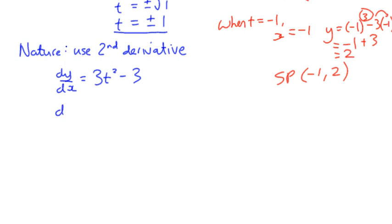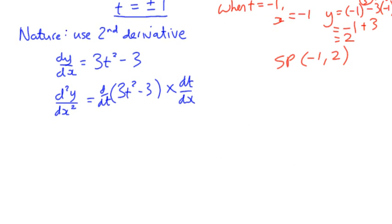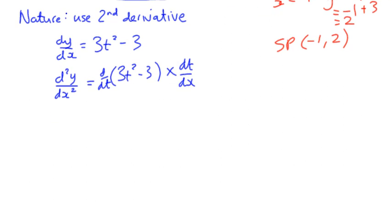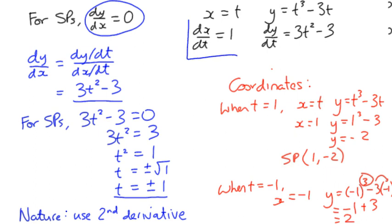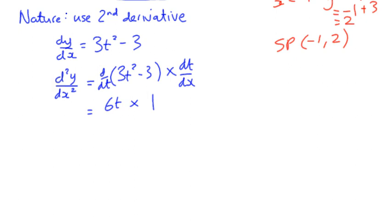So the second derivative, d²y/dx², is the derivative of 3t² - 3 with respect to t. So we're going to differentiate that as we normally do, as long as we multiply by dt/dx, because we're not really differentiating by x in the first instance. We differentiate, we get 6t multiplied by dt/dx. Well, we worked out that right back at the top, that dx/dt was 1. And therefore, dt/dx is also going to be 1. So the second derivative is therefore 6t.